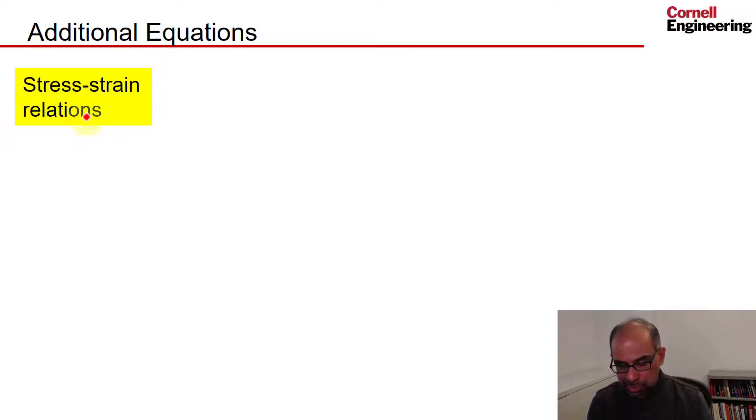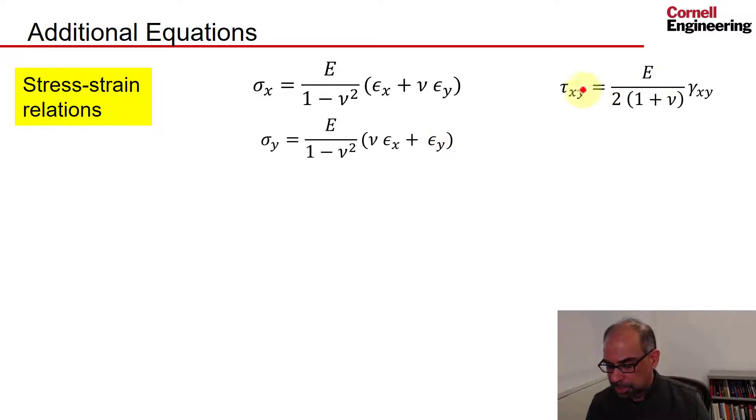We bring in the stress-strain relations, and here we'll assume the material is linear isotropic, so we can use the 2D plane stress version of Hooke's law. That's for sigma x. Similarly, you have sigma y relating to the normal strains, and you can relate the shear stress to the shear strain. The assumption embedded here is that the material is linear and isotropic.